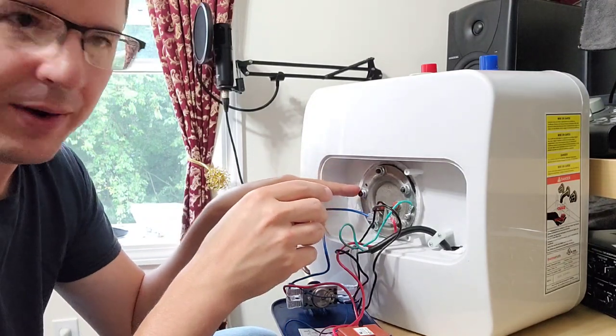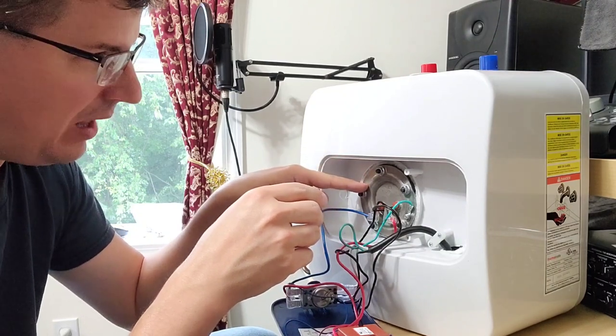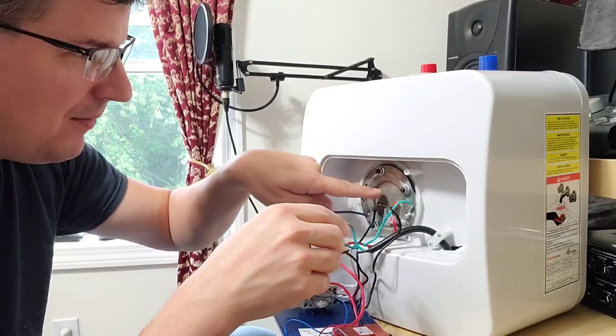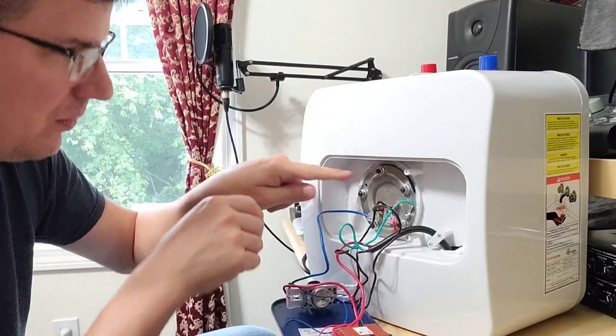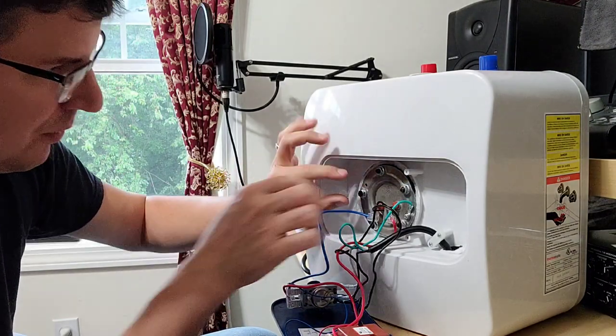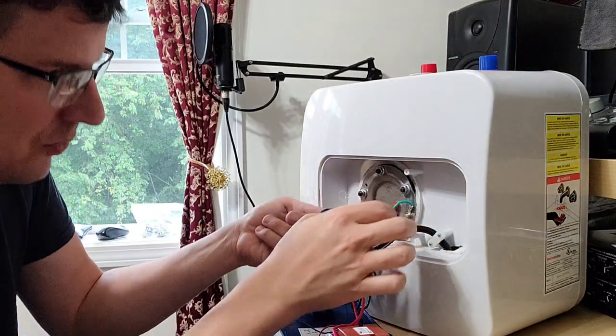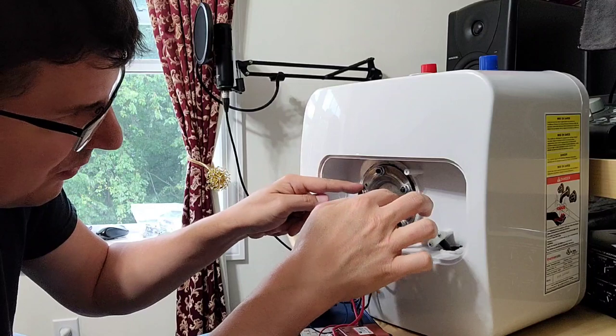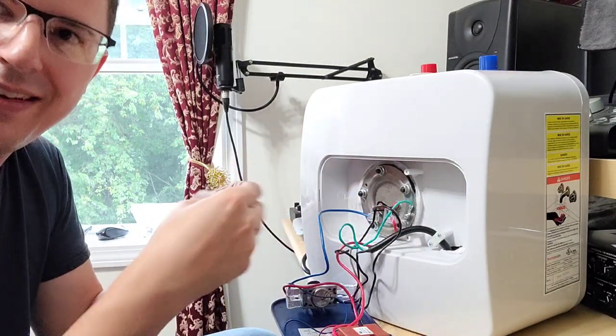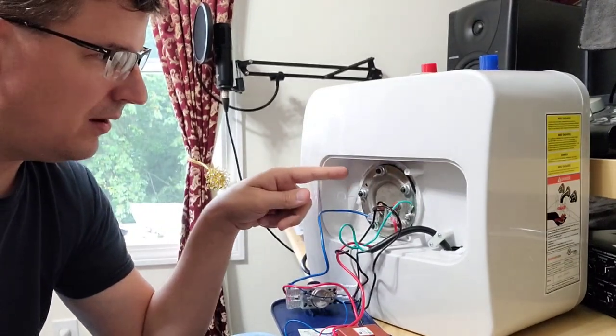You do have to do this periodically to inspect not only the heating element but also the anode rod that is mounted on top of this heating element plate. To remove this, it looks to be 10 millimeter nuts. There's one, two, three, four, five screws. Let's remove those and pull the element out.